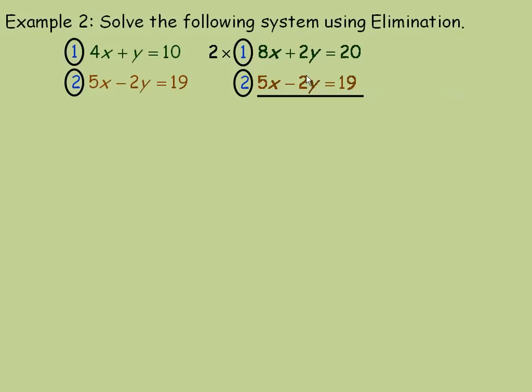If they're opposites, opposites add to 0. We subtracted on the last page because the two 6x's were the same sign. Things that are the same subtract to 0. But opposites add to 0. So that's why I'm going to add 2y and negative 2y will add to 0. So 8x and 5x is 13x and 20 and 19 is 39. Again, the y's add to 0. So dividing out the 13, we get x equals 3.